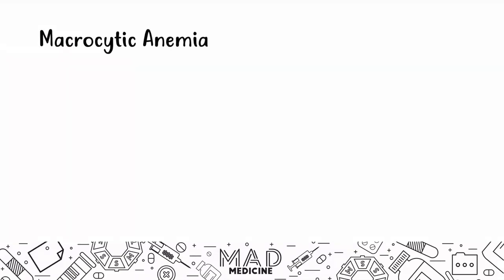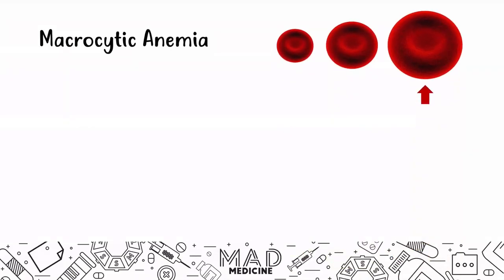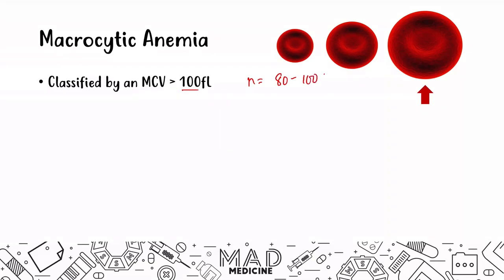When it comes to macrocytic anemias, these anemias are classified by an MCV — mean corpuscular volume — of greater than 100. This is large. Normal is 80 to 100. Because we have a large red blood cell, it's going to be greater than 100, and that should clue you into a macrocytic anemia. A lot of times, hemoglobin and hematocrit concentration will be normal, and we're going to talk about why.